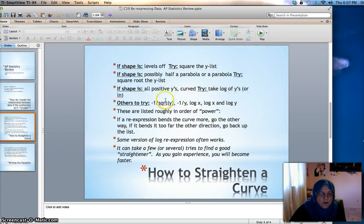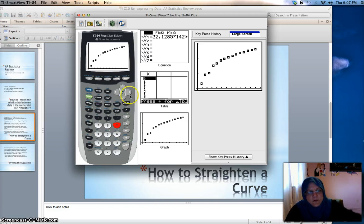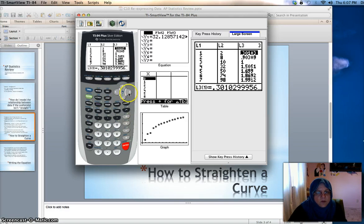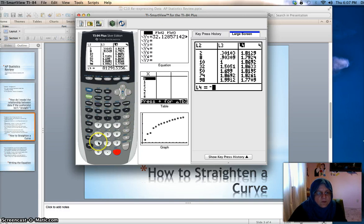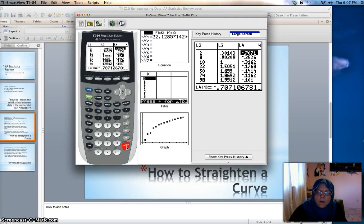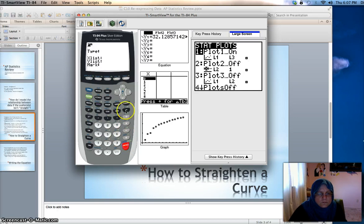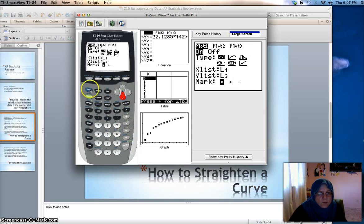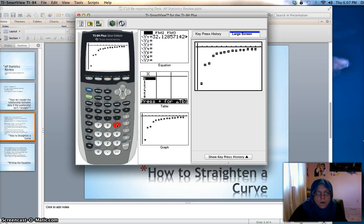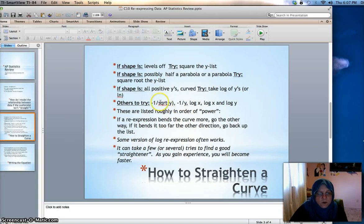I can't remember which direction my original scatter plot was bent, so I don't know if this is bent the wrong way or just further. Let me just go a little bit in either direction. The next one after log of y's was negative 1 over square root of y. So remember this is bent up, so I'm going to try negative 1 over the square root of y. Negative 1 divided by square root of L2, because that's where my y's are. Let's go look at that scatter plot. That's even more bent in the wrong direction. So I know I need to go the other direction on the ladder.